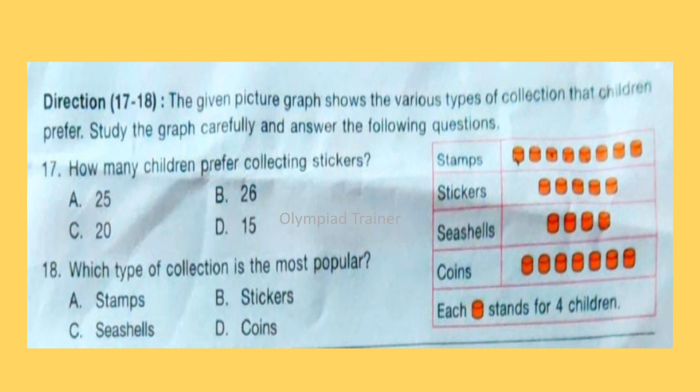For questions 17 and 18, the given picture graph shows the various types of collection that children prefer. Study the graph carefully and answer the following questions. Question 17: How many children prefer collecting stickers? Answer is Option C, 20. Now for stickers there are 5 stamps and each stamp stands for 4 children. So 5 4s are 20.